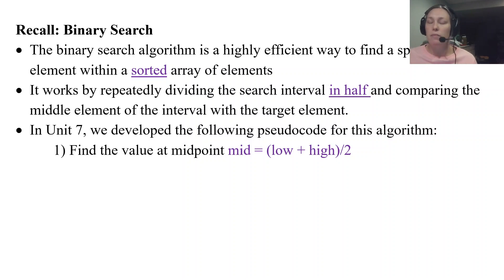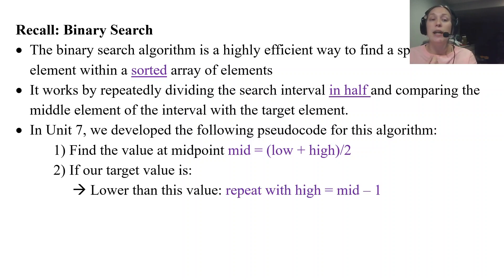What's the middle index? We then look to see is our target value at that middle index? If it is, great, return the value. But if our target value is lower than the value at our midpoint, we want to repeat this process but we want to change our high index. So if our target value is lower than our midpoint, that means that our value is in the lower half of the list, so our high needs to come down.